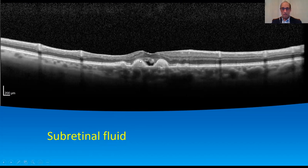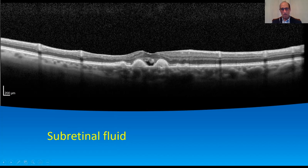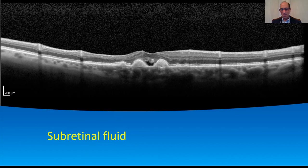You can get subretinal fluid in dry AMD. Here's a dry AMD patient — you've got the drusen, and people think this is like a drape, but I think the RPE is just sick here and can't get rid of the fluid. These tend to be toward the middle of the fovea. This is dry AMD, so you have to be cautious — you wouldn't treat it. You can do OCT angiography to confirm it's dry. Also be warned: you can have dry AMD alongside other diseases like macular telangiectasia or diabetic macular edema. Just because you have AMD and fluid doesn't mean the fluid is from the AMD.